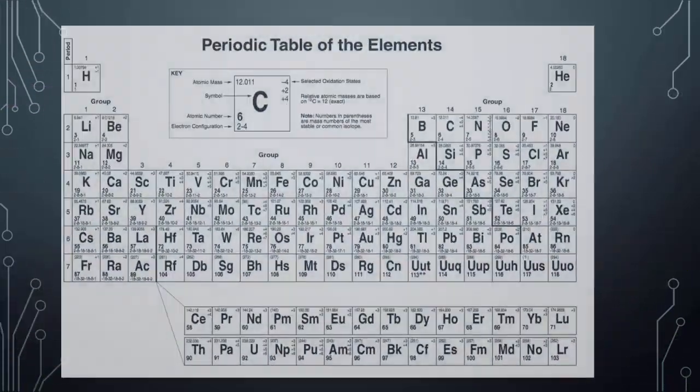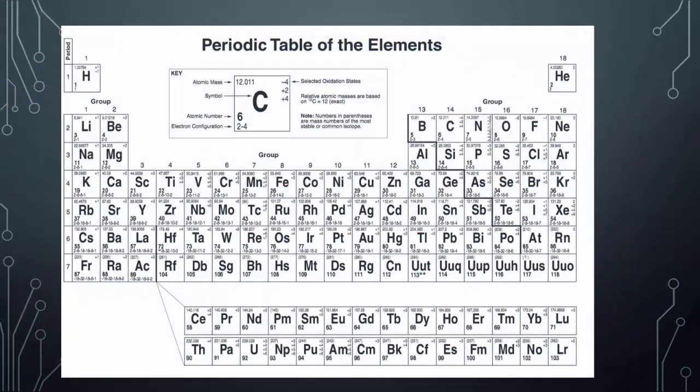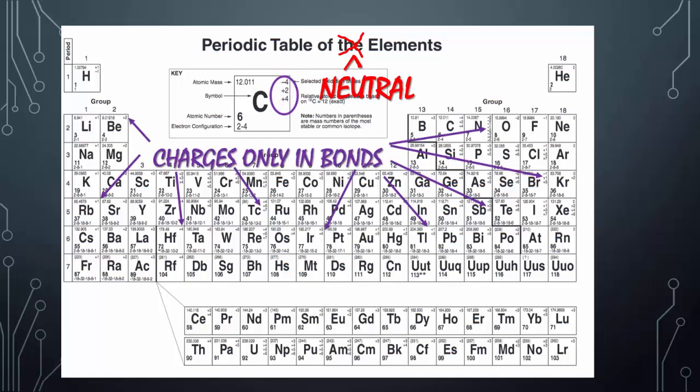Let's look at the periodic table one more time. This is the standard periodic table that is in your reference table. Every element on its own is neutral. Any of these oxidative charges are only present when they're in a bond — it could be an ionic bond or a covalent bond — but these charges only occur when you have some sort of compound or covalent molecule.